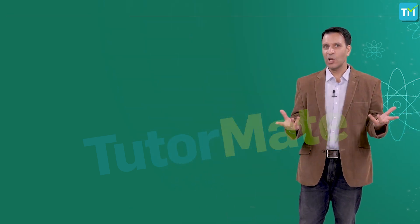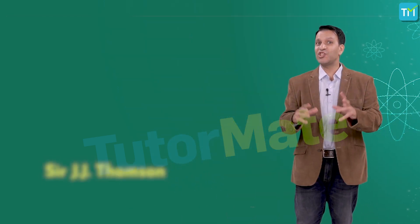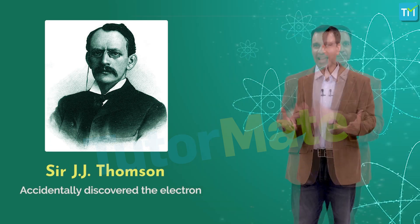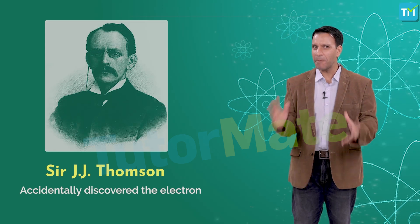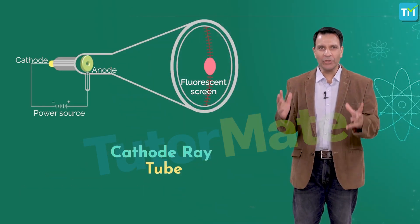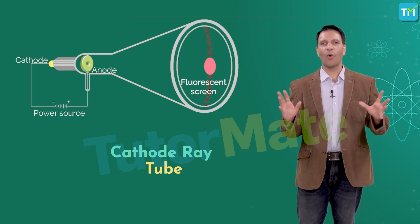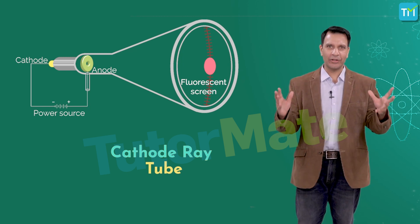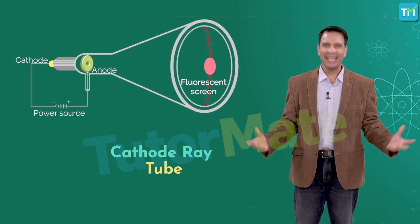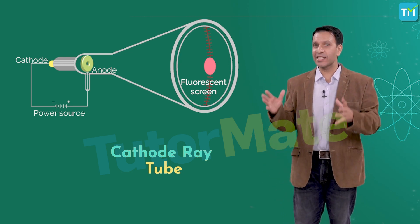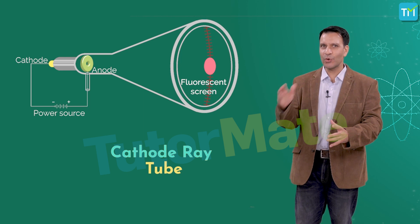Fast forward to the late 1800s, when things changed. Sir J.J. Thomson accidentally discovered the electron while conducting experiments using a cathode ray tube. A cathode ray tube is a vacuum-sealed tube that does not allow air to enter it.